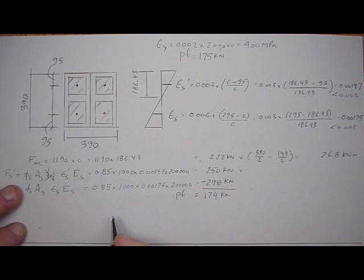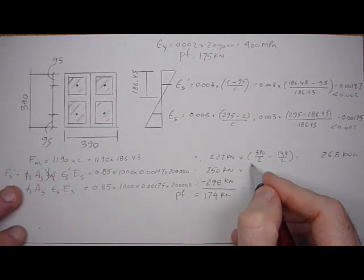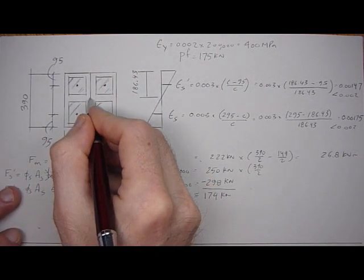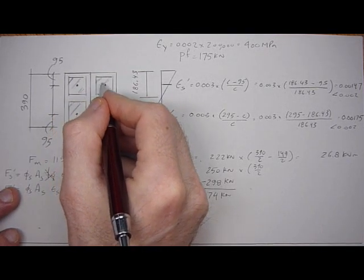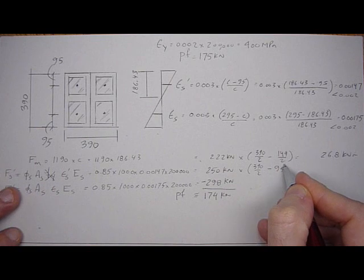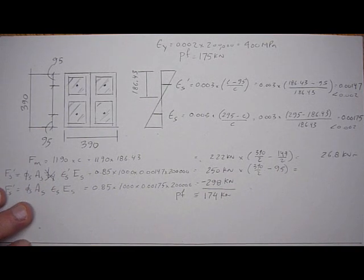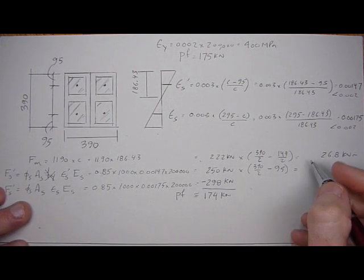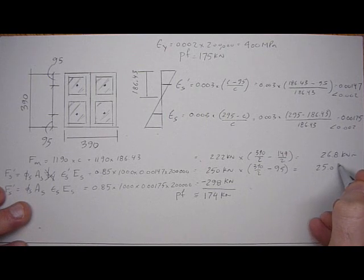We can do the same for the compressive steel. 390 over 2 gives us this distance minus 95. 250 times (390 over 2 minus 95), and that's 25 kilonewton-meters.